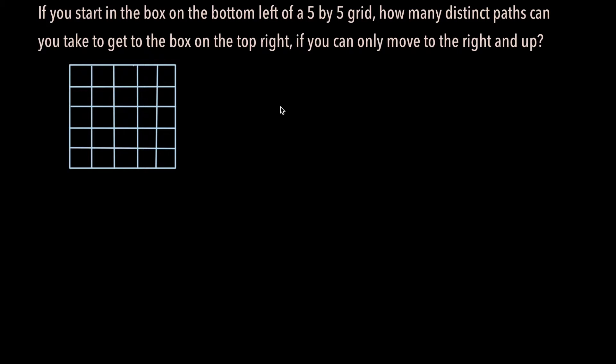We can start this problem by considering a smaller and simpler variation in which we have a 2x2 grid instead of a 5x5 one. The only distinct paths in this scenario are going to the right and then up or going up and then to the right. So we have a total of 2 paths.